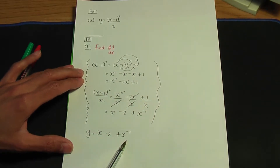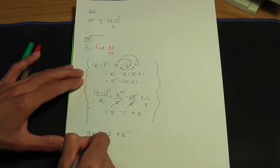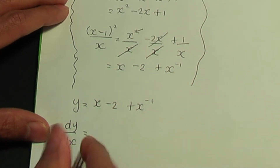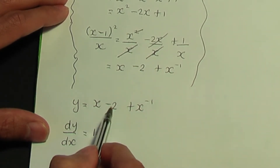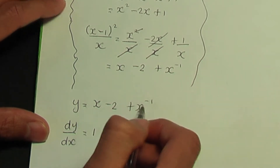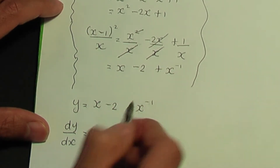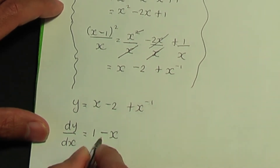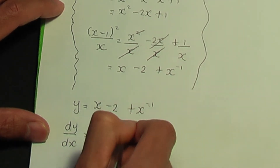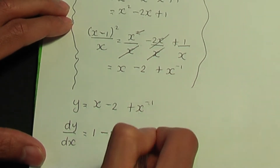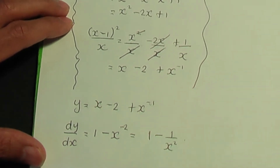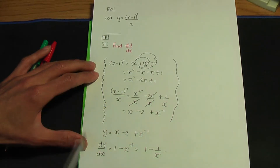Now we differentiate y = x − 2 + x⁻¹ to find dy/dx. Differentiating x gives 1; differentiating the constant −2 gives 0; differentiating x⁻¹ gives −1·x⁻², using the power rule. So dy/dx = 1 − x⁻², which is the same as 1 − 1/x². That completes step 1.